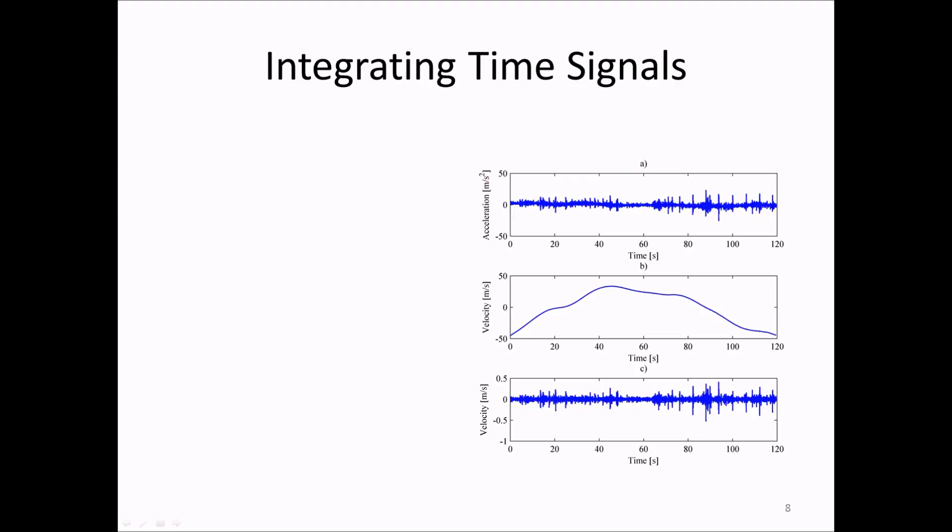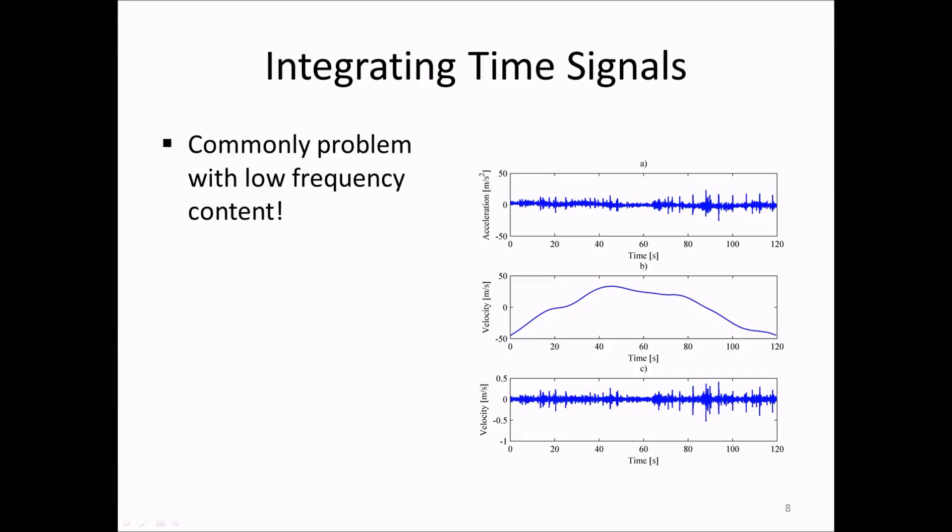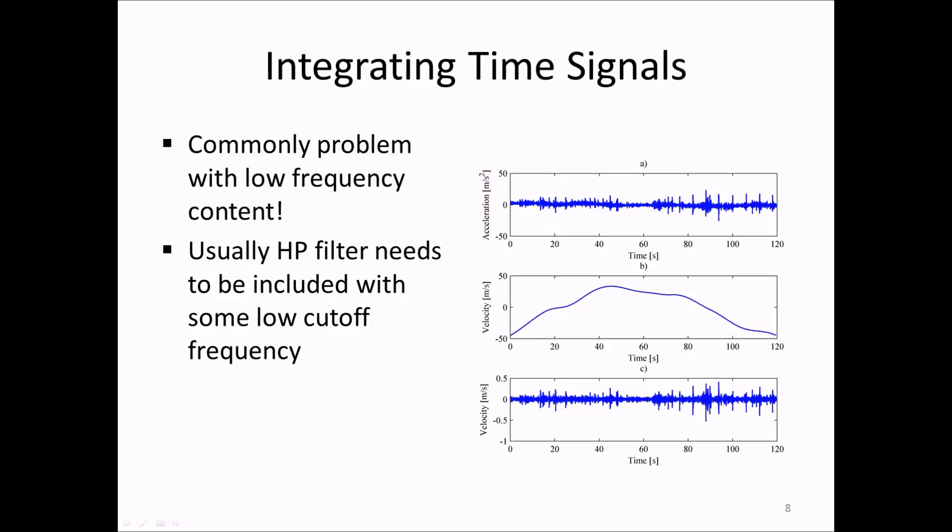Why do we get the problem seen in the middle plot? It is not necessarily due to the integration method itself, but rather the accuracy of the acceleration signal. Most accelerometers we use are piezoelectric and are not accurate at very low frequencies, so the integral of the signal becomes wrong. We typically always have to apply a high-pass filter to data before integrating accelerometer signals.